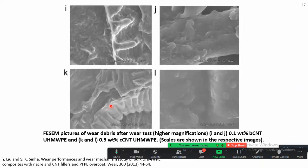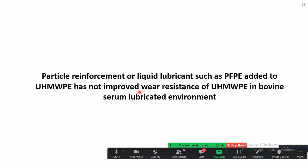The SEM picture of debris particles shows that UHMWPE is a very ductile material — the debris particle shows a lot of plastic deformation with very little cracking. This is one of the good things about UHMWPE: it allows a lot of plastic deformation so cracks are not initiated and fatigue life is better. From our results and literature survey, particle reinforcement or liquid lubricant such as PTFE added to UHMWPE does not improve wear resistance in bovine serum lubricated environment.